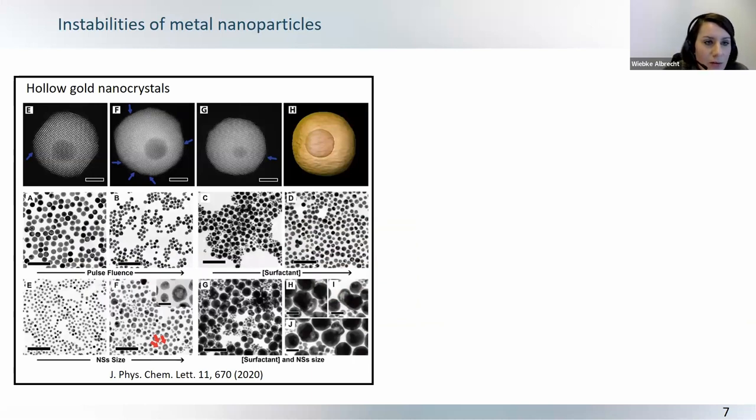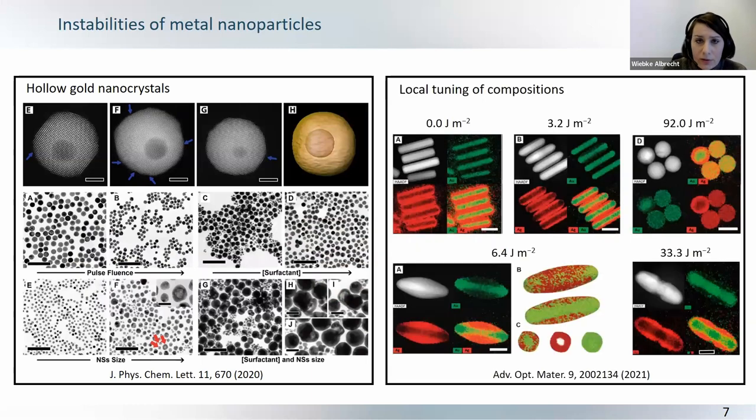On the one hand, here, you can see hollow nanocrystals that have been generated by excitation with nanosecond pulses, and also local tuning of compositions becomes possible, as shown here for these gold-silver nanorods, which have been excited at different powers. And you can already see that there's a large variety of parameters you can tune and you can look at, and that already gives you maybe an idea of how complex the whole process is.